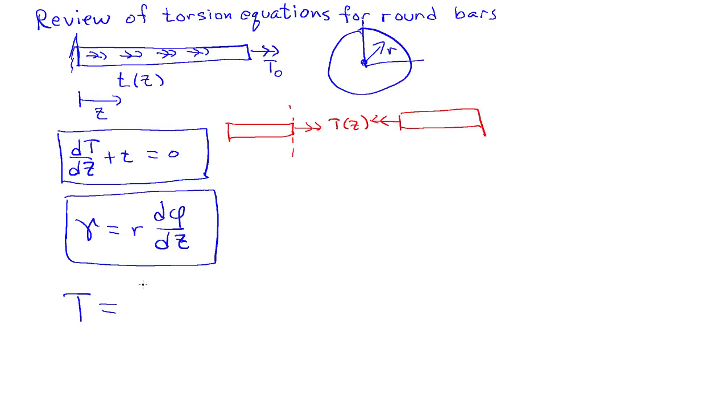The net torque on a cross section can be related to the shear stresses that are acting on the cross section. So it has an integral over the area of position r times tau, the shear stress, dA. So that's how we define the resultant on the cross section.